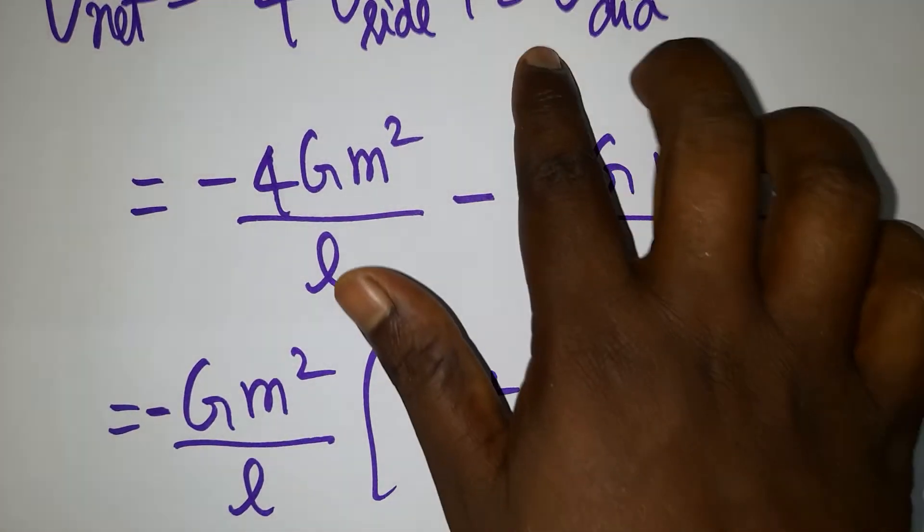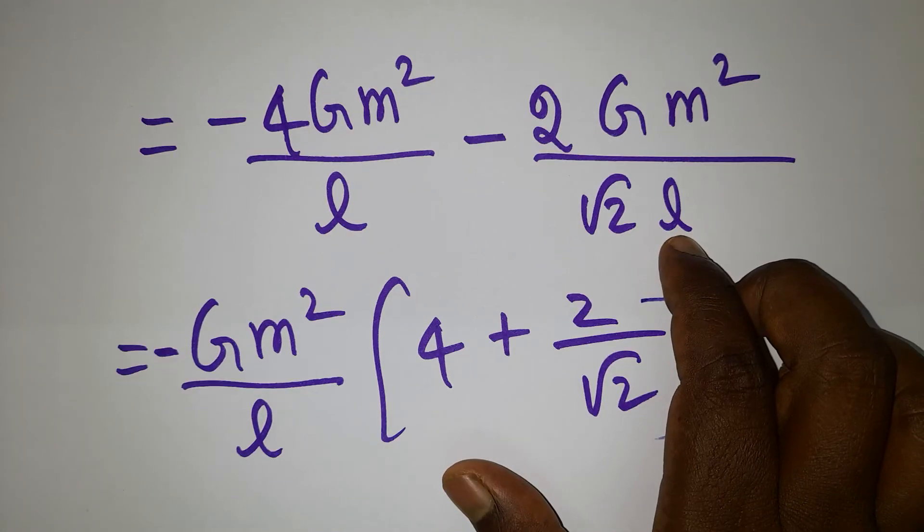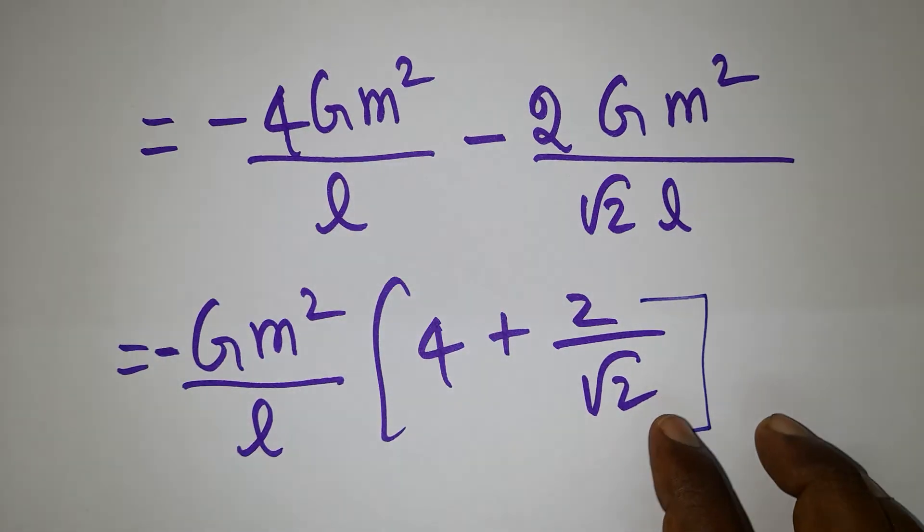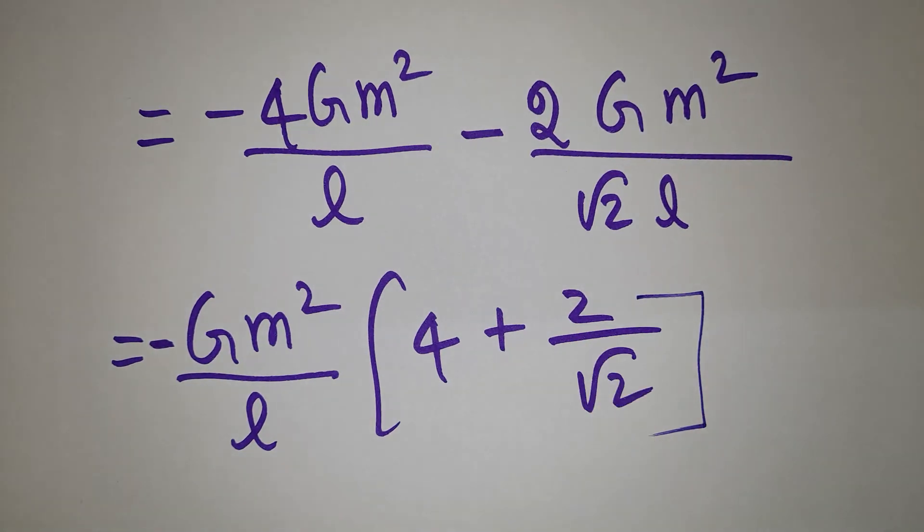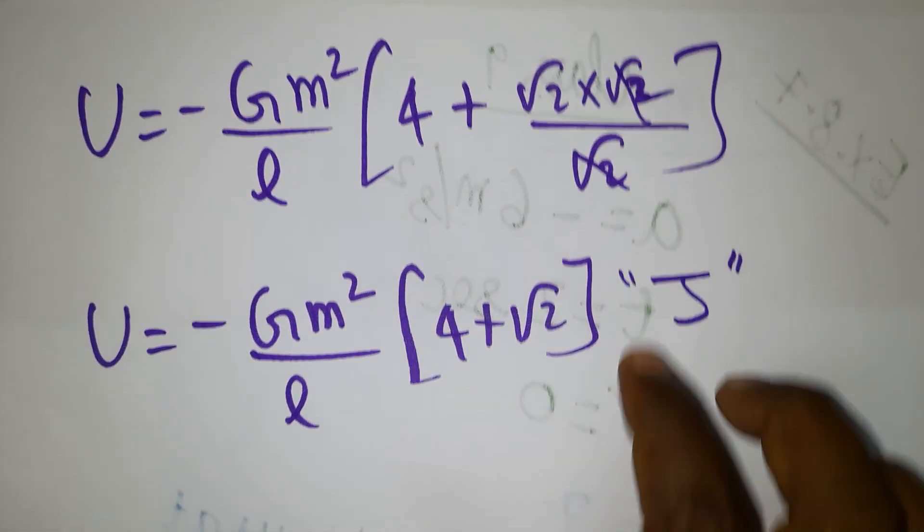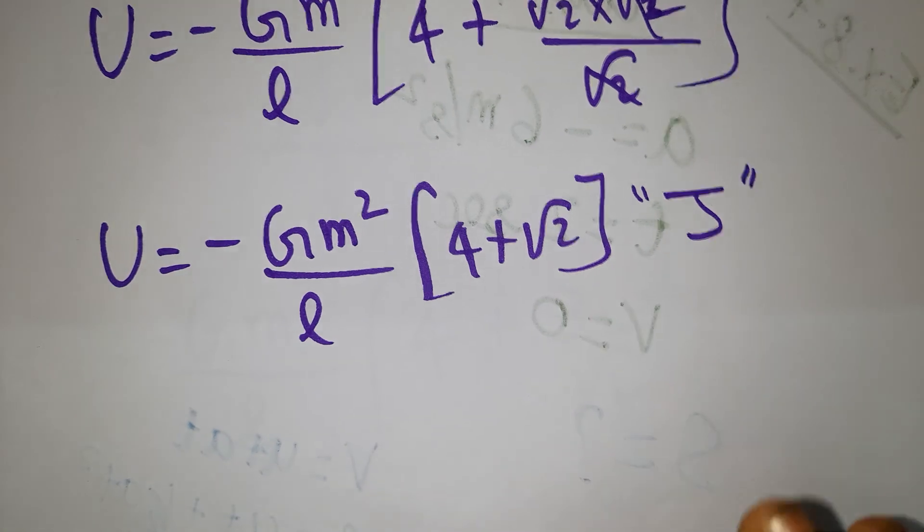We found the diagonal length is root 2 times l. I am taking common outside. So 2 we can write as root 2 into root 2. Root 2 and root 2 get cancelled. This is the final answer.